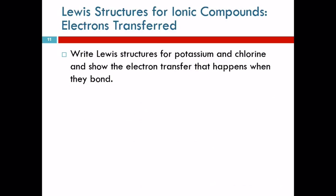Let's look at potassium and chlorine and see what happens. We need to start with the Lewis structures for the atoms. The element symbol for potassium is K, and K has one valence electron. Chlorine is Cl and chlorine has seven valence electrons.